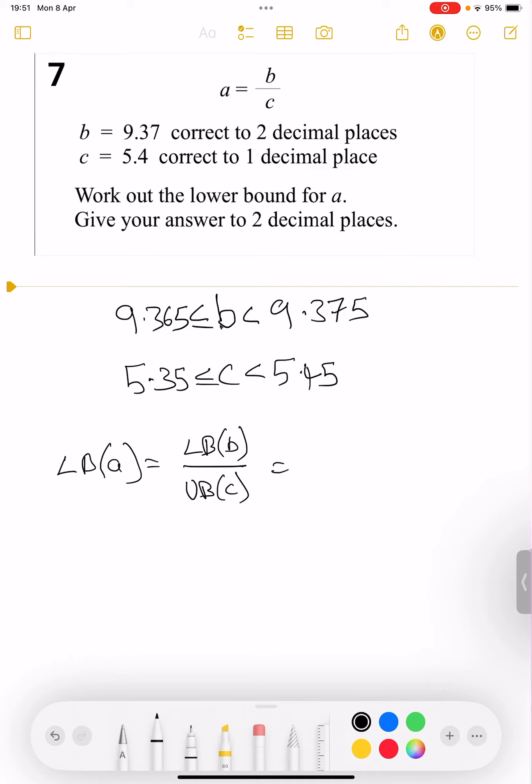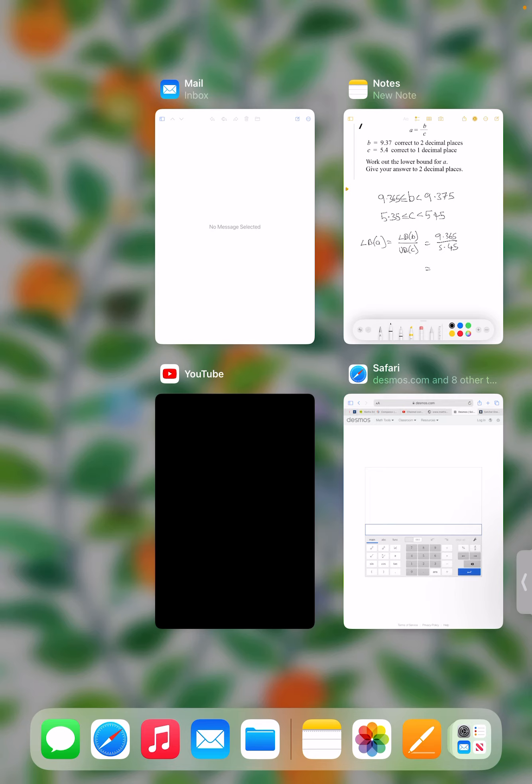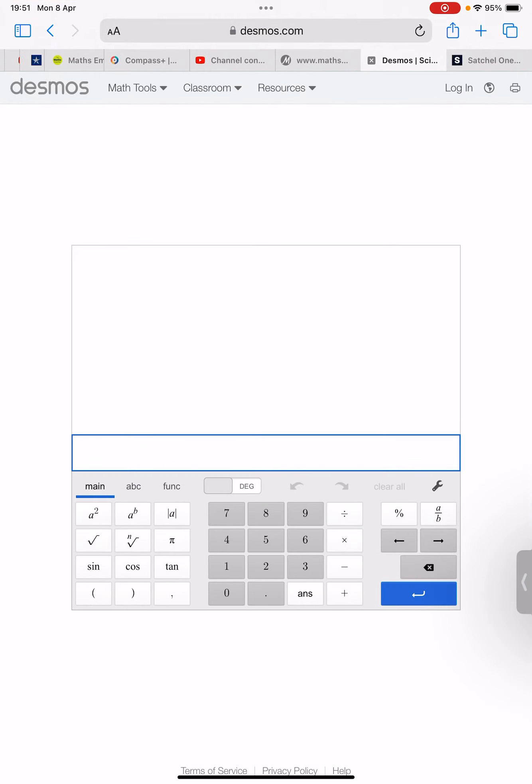Substituting in, the lower bound of b is 9.365 and the upper bound of c is 5.45. If you're not certain, of course what you could do is just try them all, but you'll find that learning those rules is a good idea. So what I've got is 9.365 divided by 5.45.